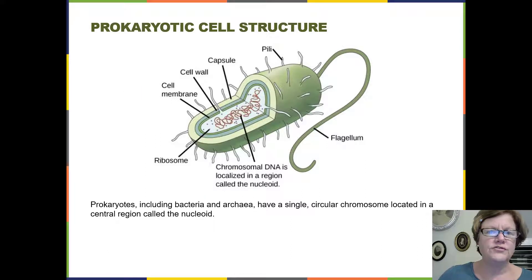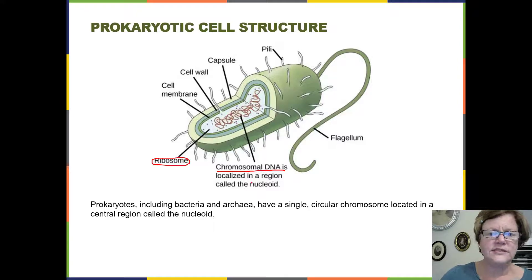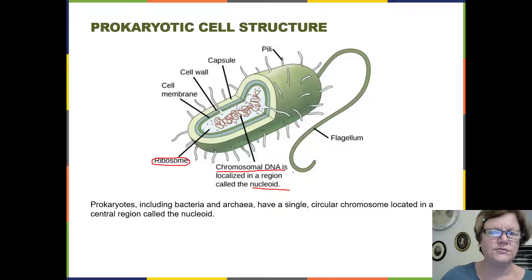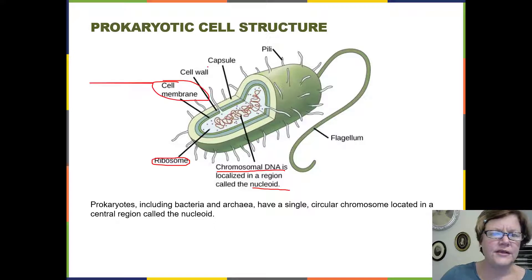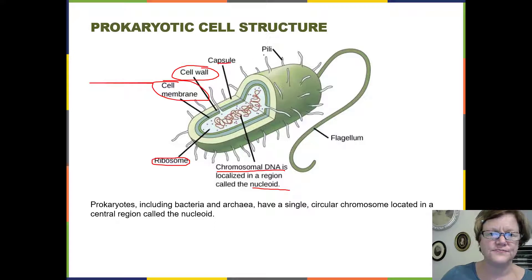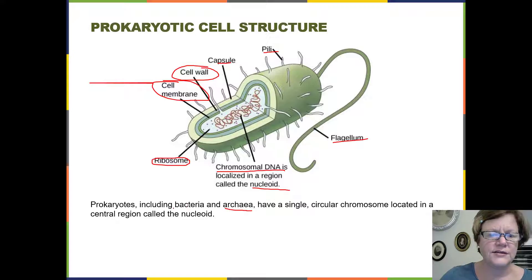You probably remember the structure of a prokaryotic cell. They all have ribosomes that build proteins. They all have a chromosome wound up in the cytoplasm, in a region we usually call the nucleoid region. They have a plasma membrane and a cell wall. There are also some other parts that may or may not be present depending on the kind of prokaryote — bacteria or archaeans.